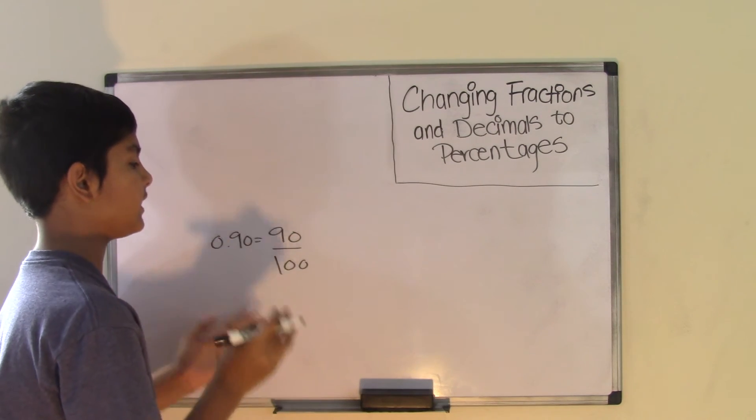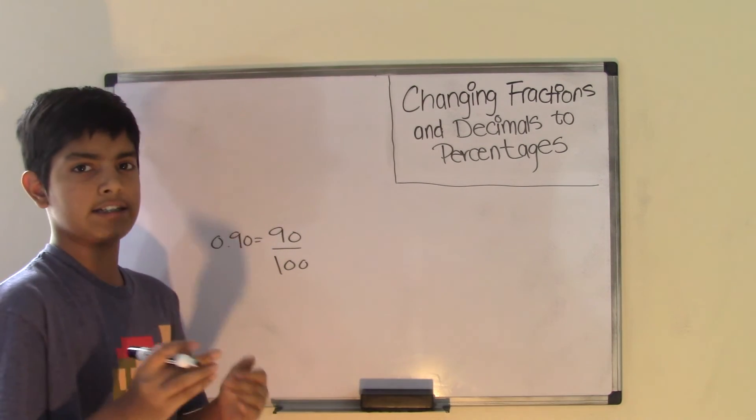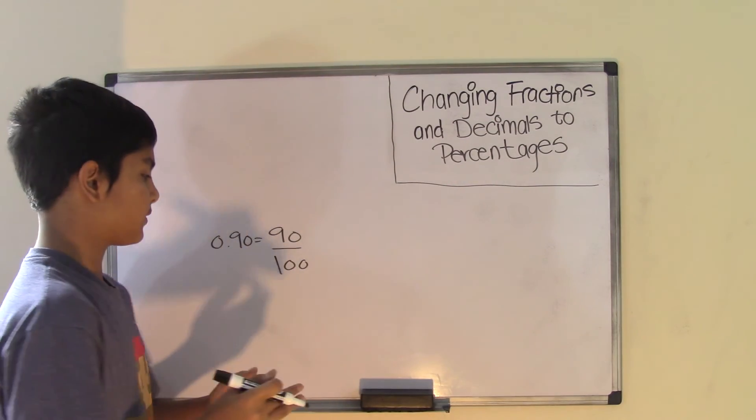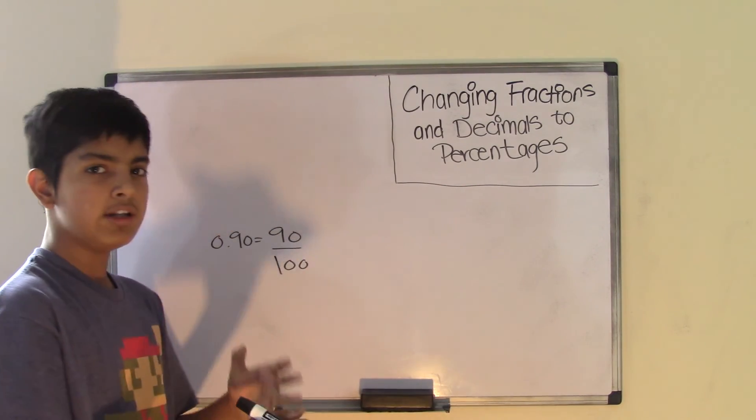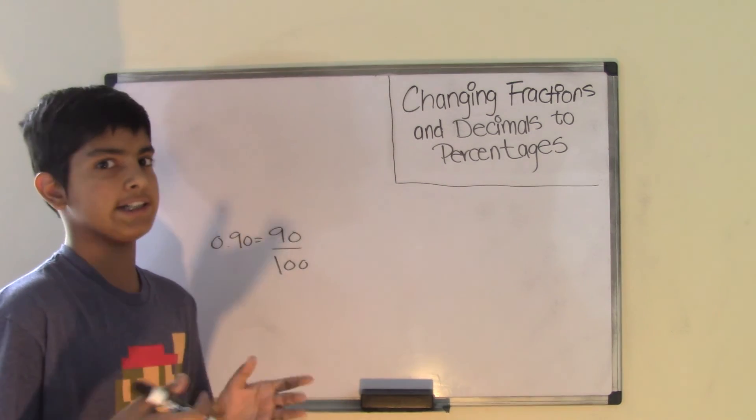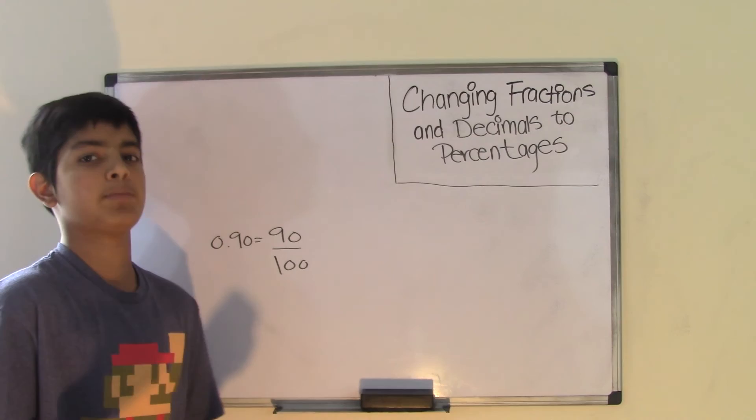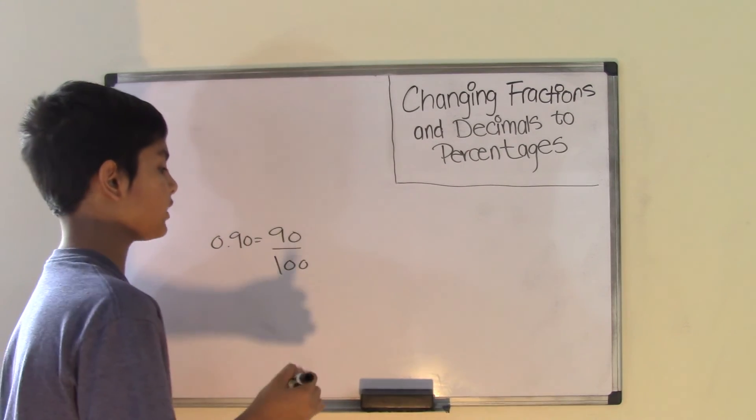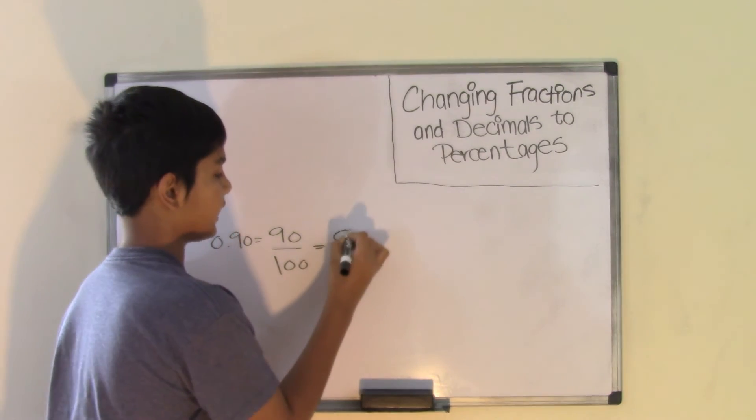Because what really 100 is, is like a whole that has 100 parts in it, and 90 is the number of parts that are shaded. So that's how most of the problems are represented. So 90 out of 100 is actually 90 percent.